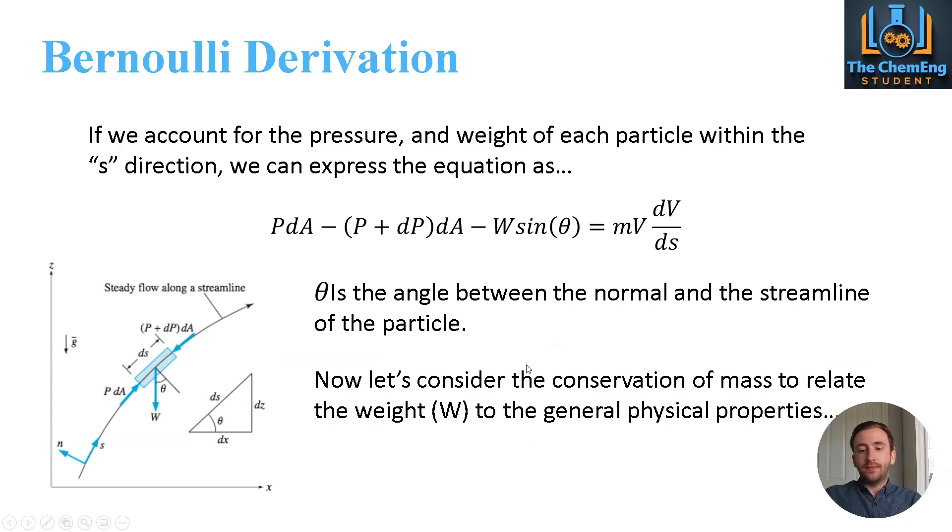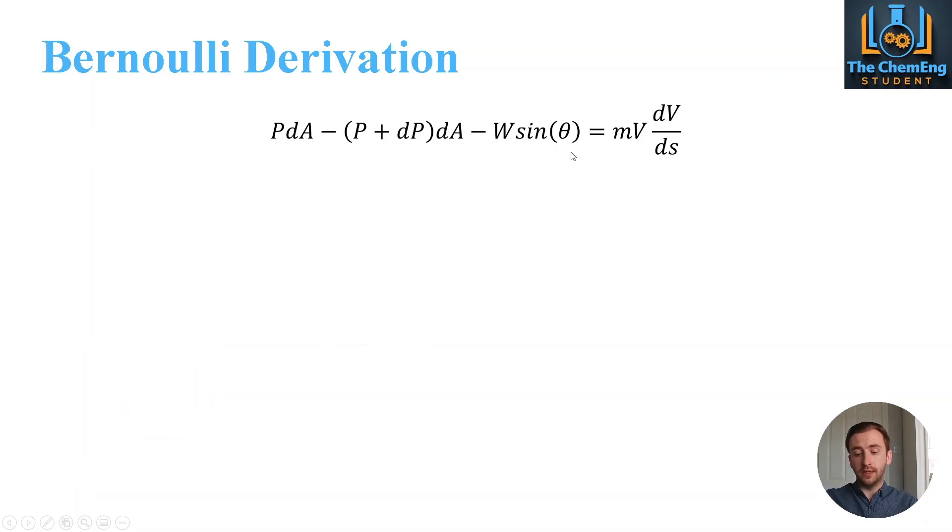Now, the only problem we have here is W as it stands is not in the correct form or in the correct way in which we can relate this to the conservation of mass. So what we need to do here is gather the general physical properties that govern the weight. And the way that we do this is as follows. So we specify that the mass is equal to the density times the volume because the kilograms would remain from the density and the volumes would cancel themselves out. Now, we can also express this as rho dA ds. So that is the multiplication of the cross-sectional area by the direction ds.